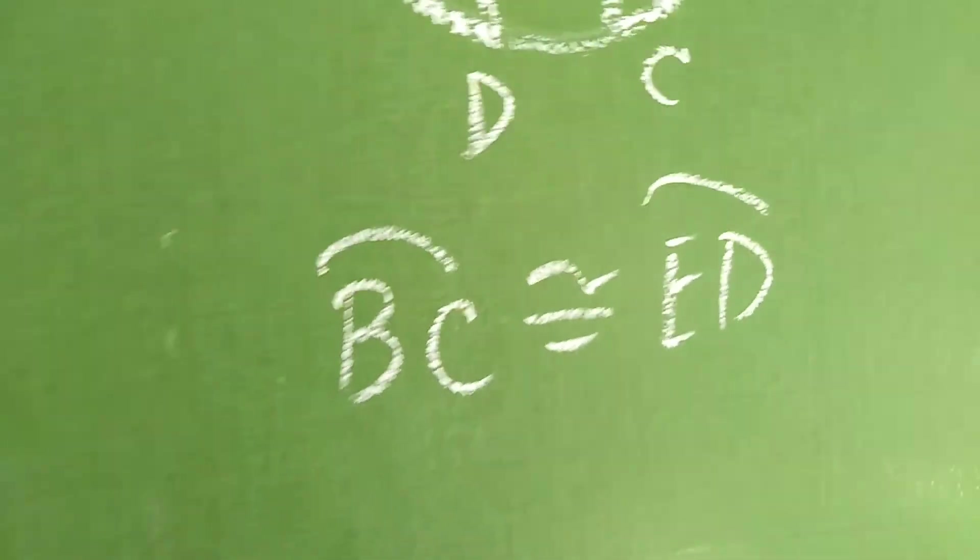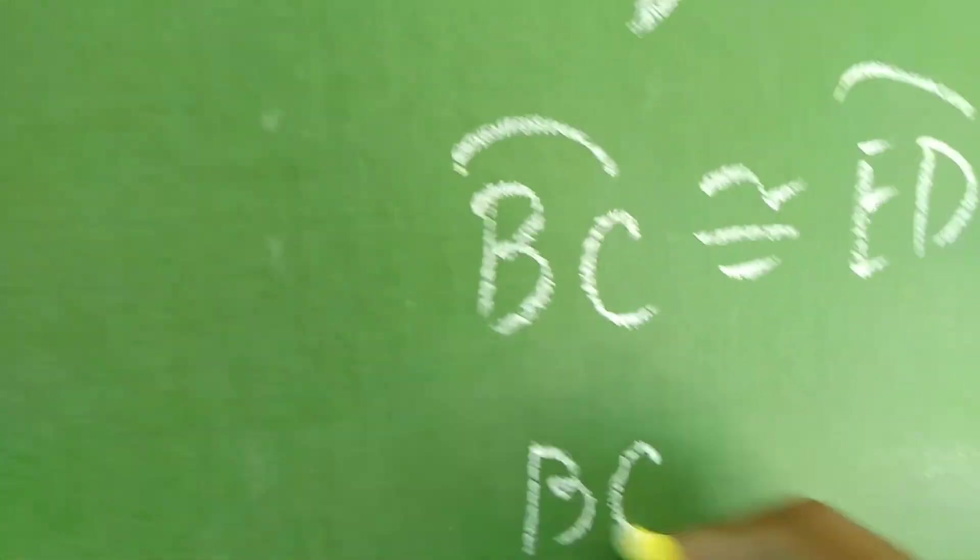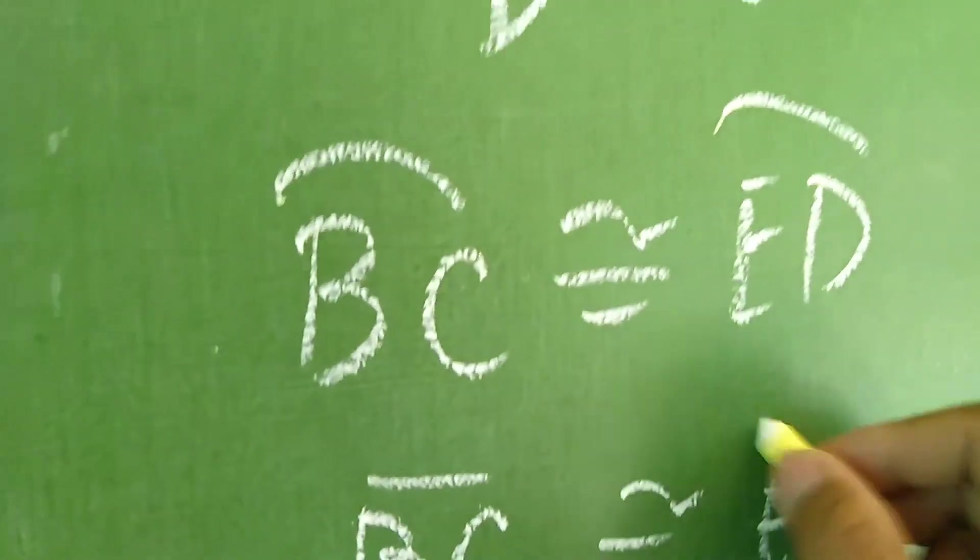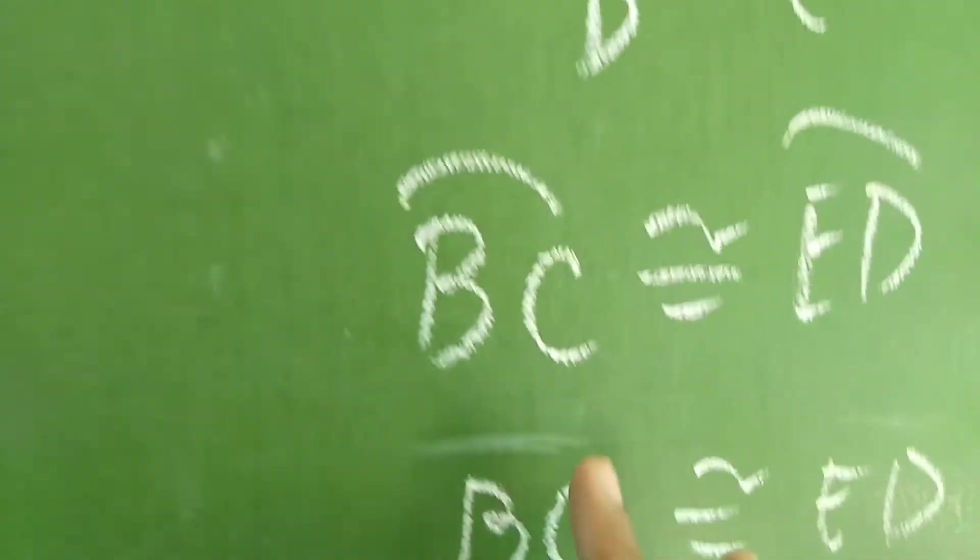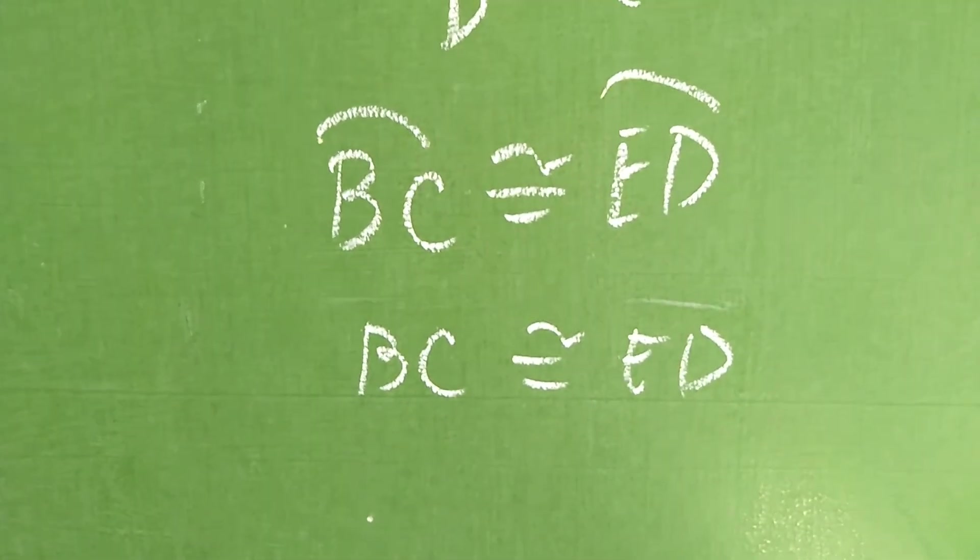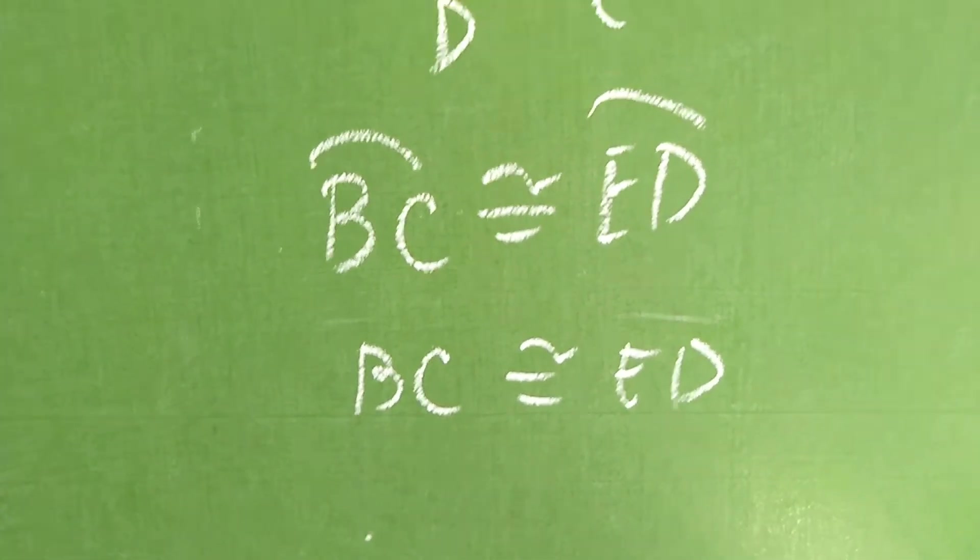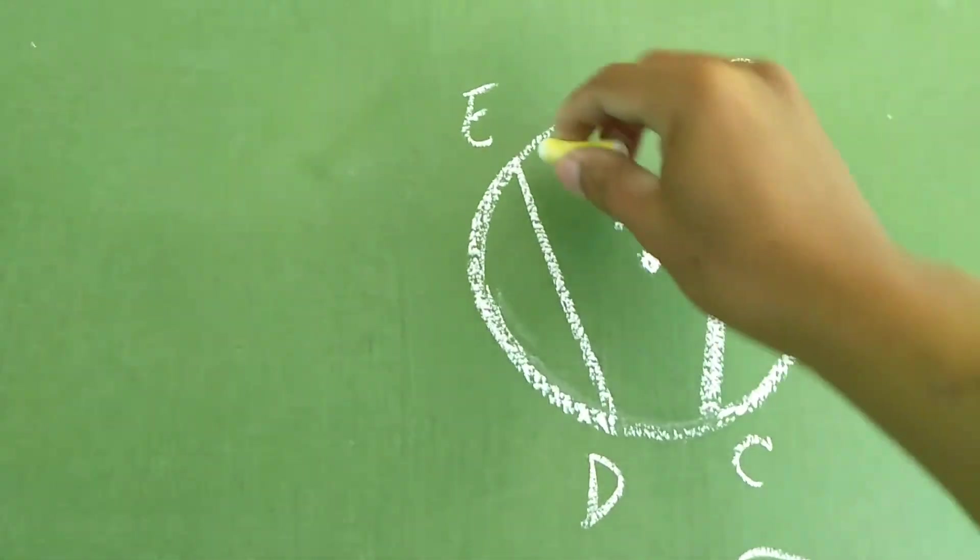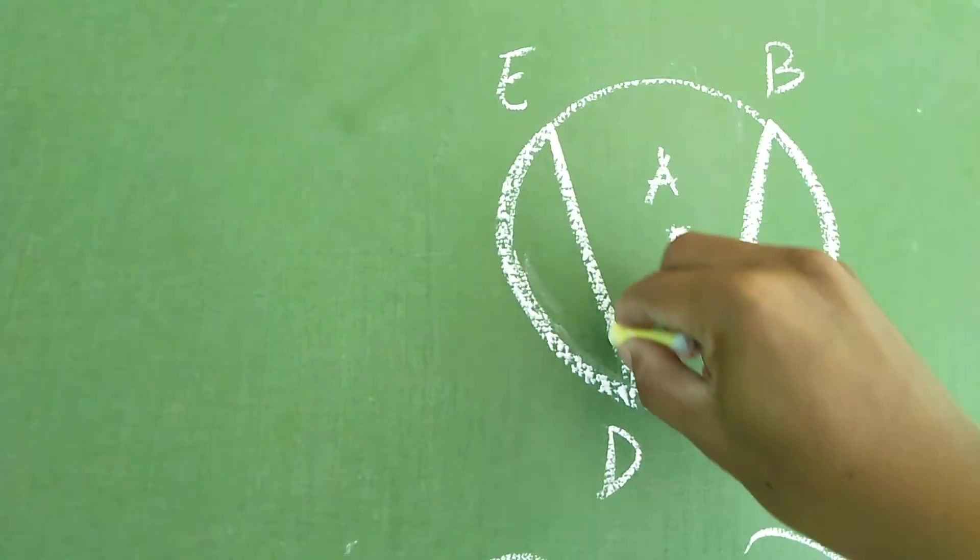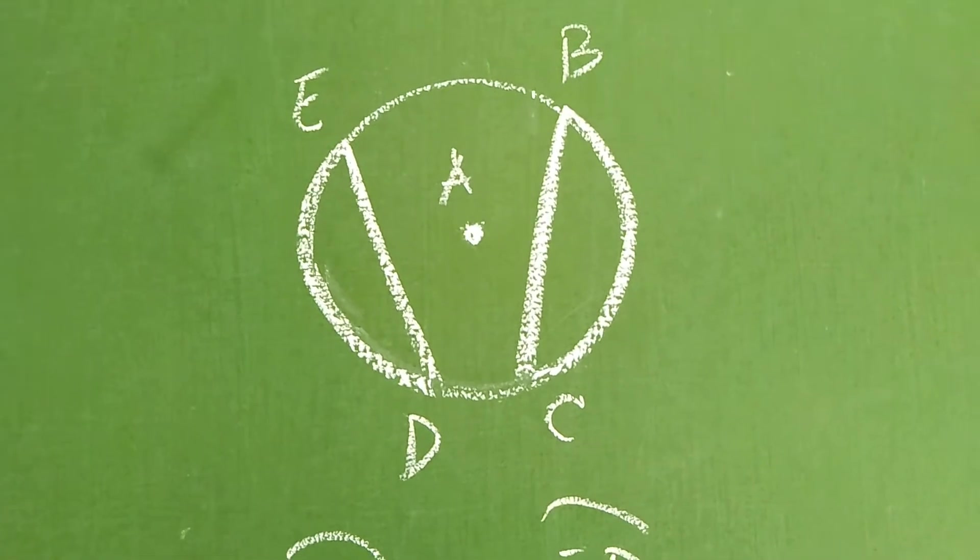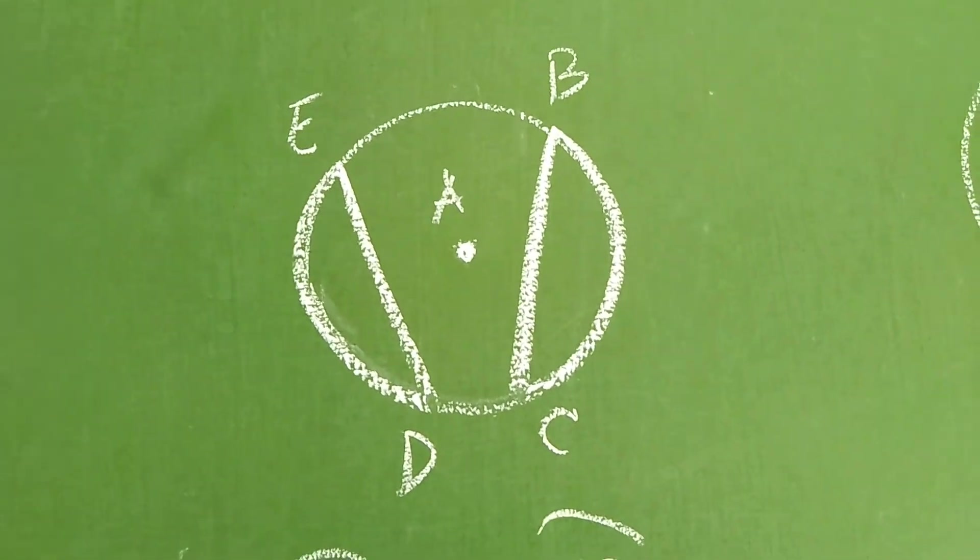Okay? Automatic daw po, sabi ng postulate that BC is also congruent to ED. Yan, pwede natin lagyan ng bar, pwede na rin pong hindi. Okay? Line BC is congruent to the line ED. Ibig sabihin, yung chord natin na BC is congruent din daw po siya sa chord natin na ED. Okay? Yun po yung isa sa mga postulate din po natin.